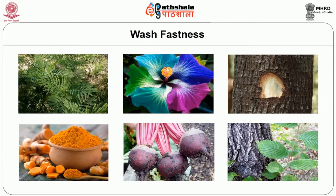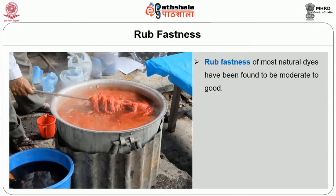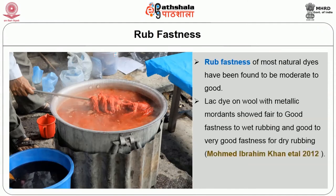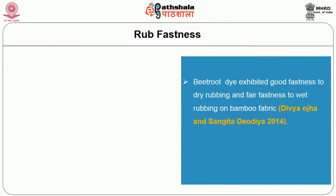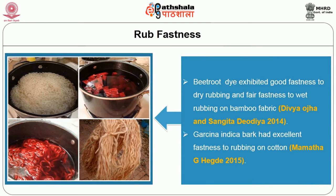Babool showed very good wash fastness while ketichu wash fastness varied from good to very good. Wash fastness of black and turmeric varied from fair to moderate on natural fibres. Hibiscus flower showed fair to good wash fastness. Beetroot dye exhibited poor fastness to staining during washing and very poor fastness to washing on bamboo fabrics. Garcinia indica bark showed fair fastness to washing on cotton. Colour fastness of samples dyed with leaves, bark, bark peel and fruit of jamun using babool bark as mordant showed good wash fastness. Wash fastness of wool dyed with tea improved after mordanting. Rub fastness of most natural dyes has been found to be moderate to good. Lac dye on wool with metallic mordants showed fair to good fastness to wet rubbing and good to very good fastness for dry rubbing. Beetroot dye exhibited good fastness to dry rubbing and fair fastness to wet rubbing on bamboo fabric. Garcinia indica bark had excellent fastness to rubbing on cotton.